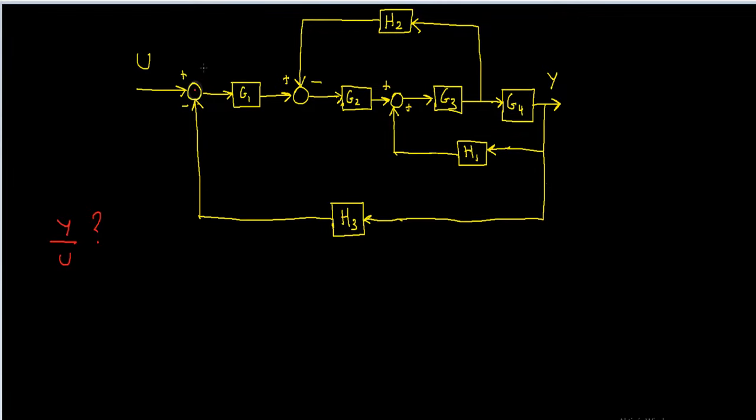We can label this node S1, this node S2, this node S3, this node S4. This final node already has a name and it's called Y. The node name refers to the signal going out of the node.